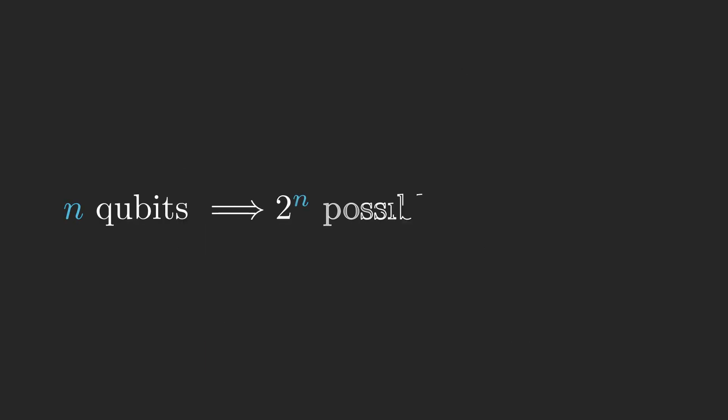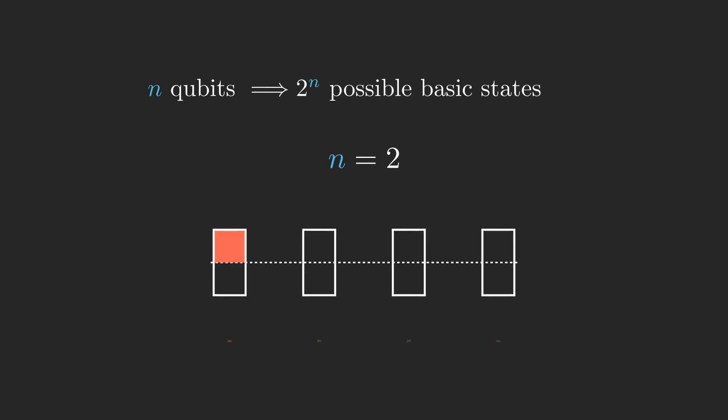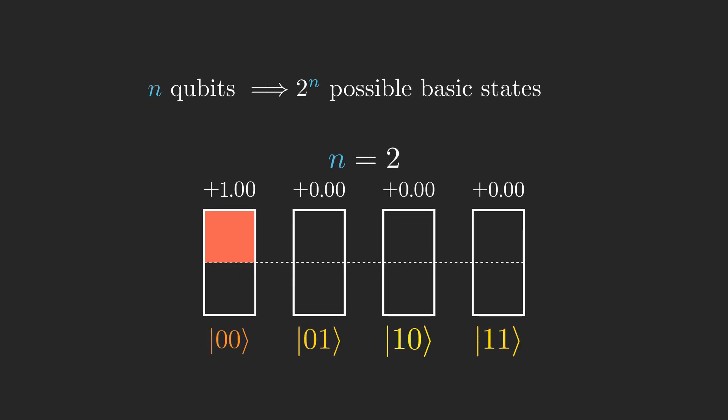With n qubits in the picture, then just like with classical bits, there are 2 to the n possible measurements of the qubits, and these measurements are the basic states. For example, if n equals 2, the basic states would be given by all possible 2-bit combinations.